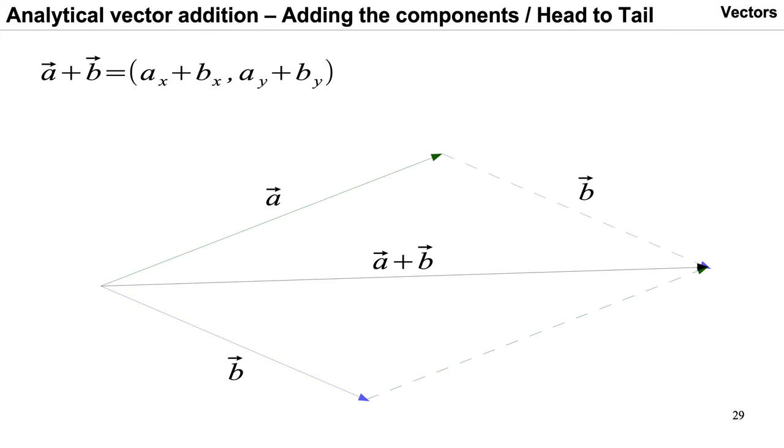So how do we add those vectors? There's two ways of doing so. One is adding the components, and the other is the head to tail method.